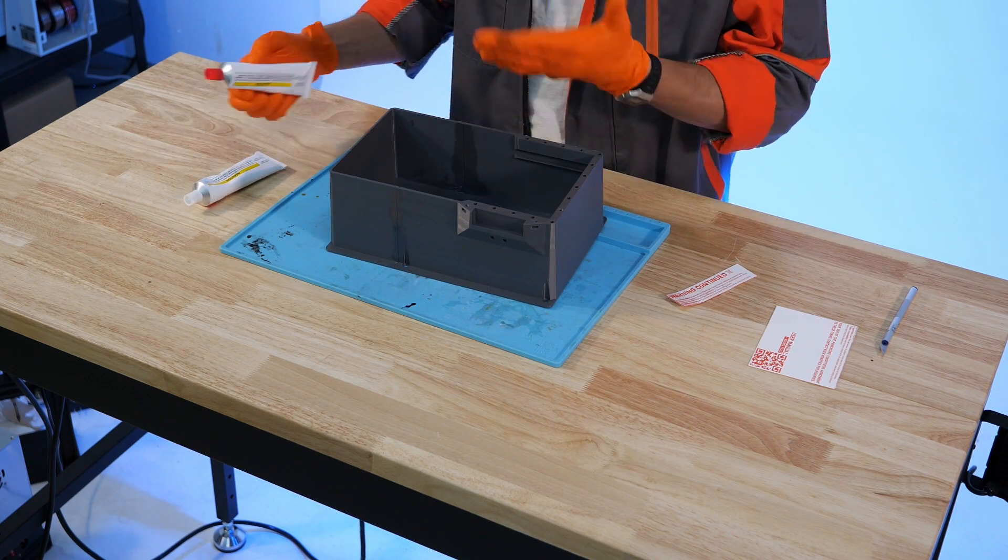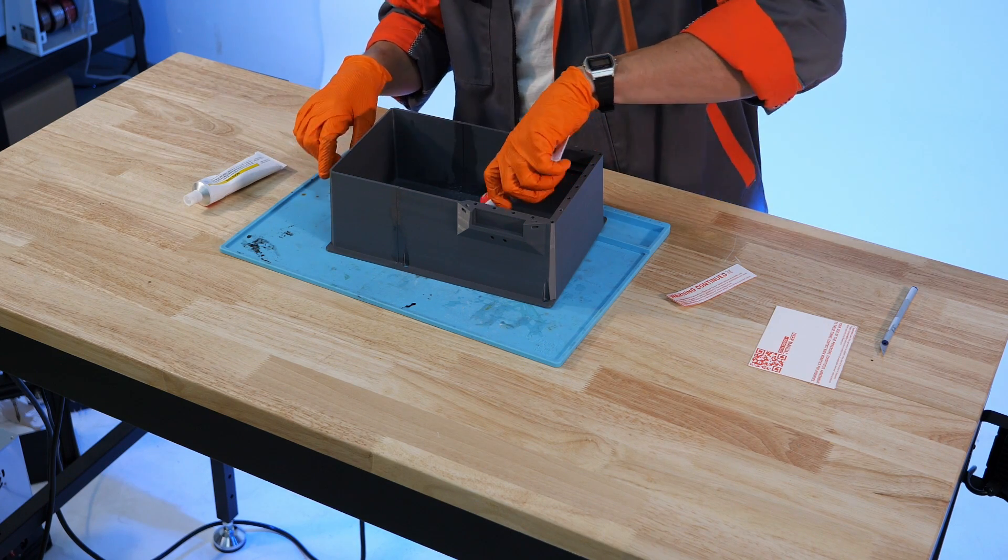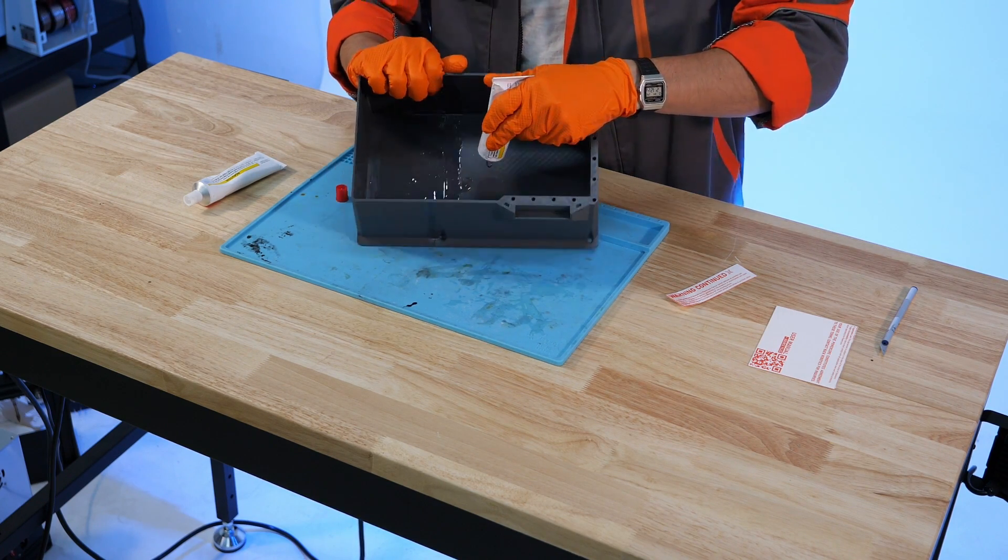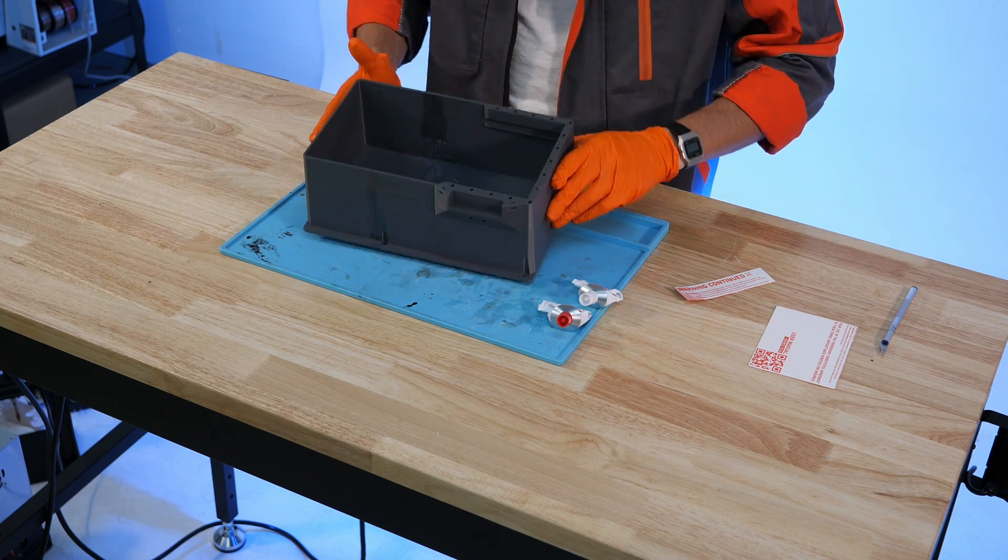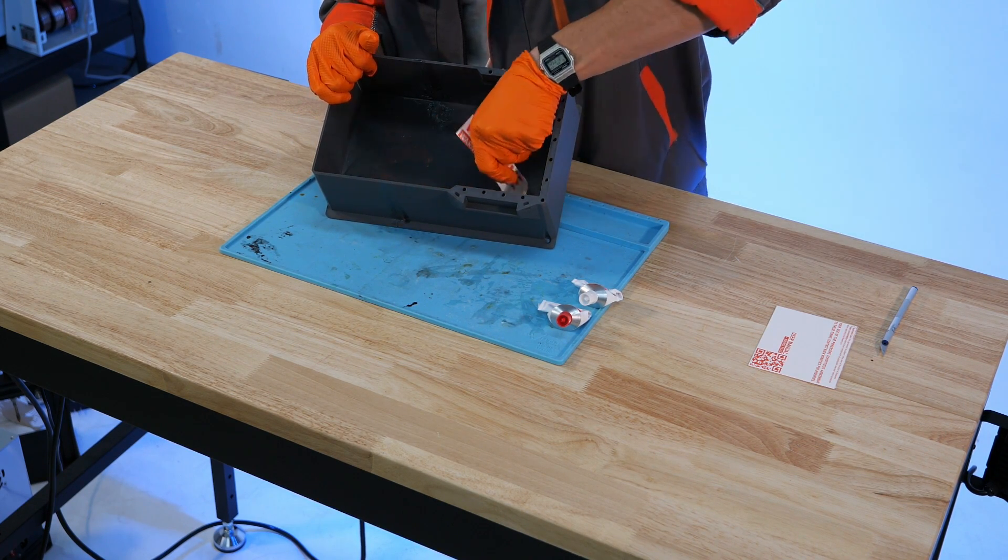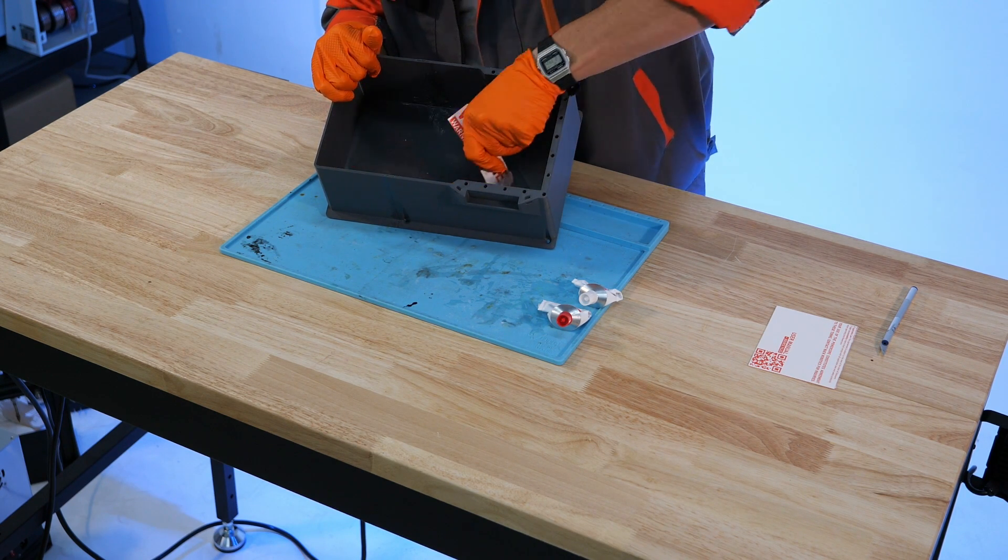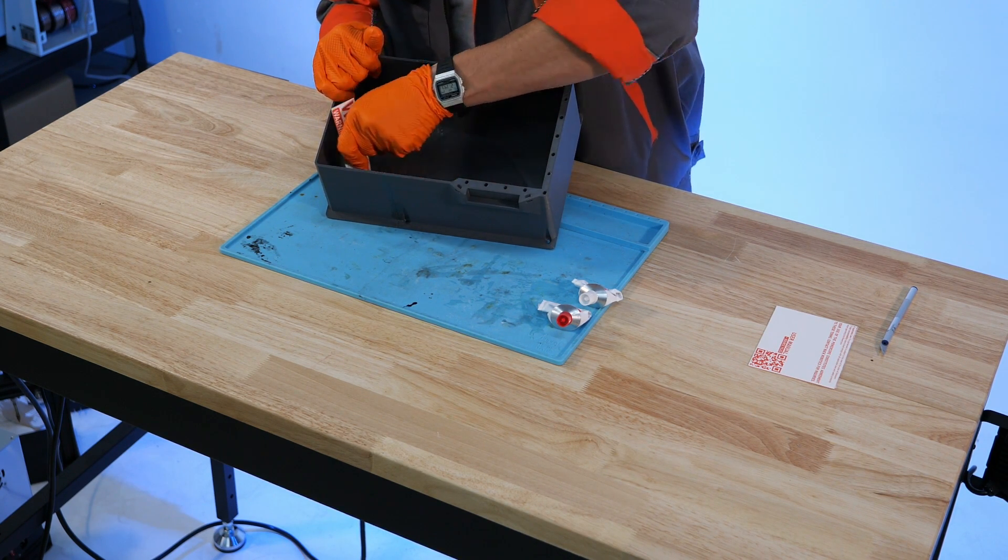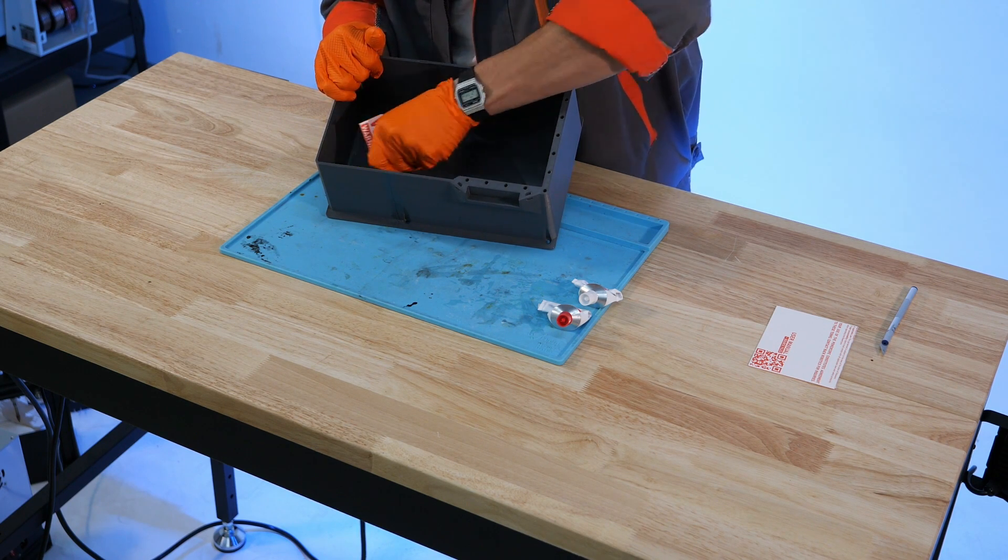So now what we're going to do is we're going to take our epoxy again and we're going to put a generous amount in the container. Be sure to mix that thoroughly just like last time and you can see that I've really filled up the container with the epoxy here. Get in there and start mixing the epoxy together. That's one of the advantages of being able to mix this directly in the vessel that you're going to be waterproofing is that you don't have to worry about transferring it later.